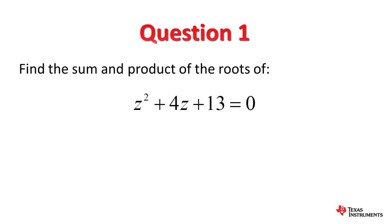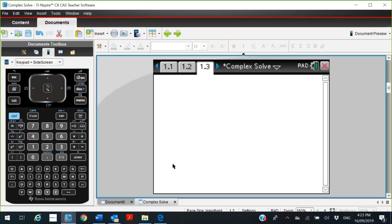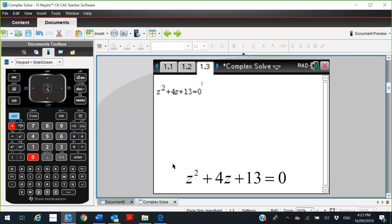Let's find the sum and product of the roots for a simple quadratic equation: z squared plus 4z plus 13 equals zero. We'll open a calculator page and type in the quadratic — z squared, then plus 4 times z, plus 13 equals zero.